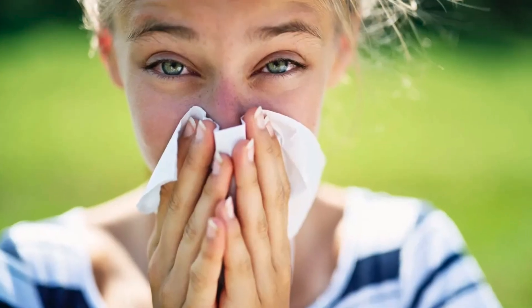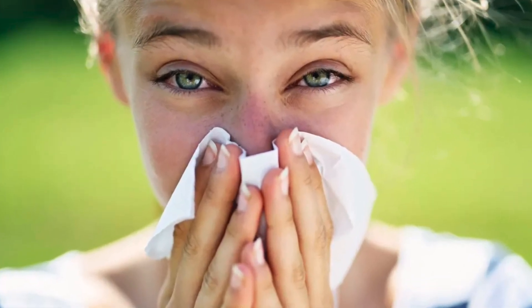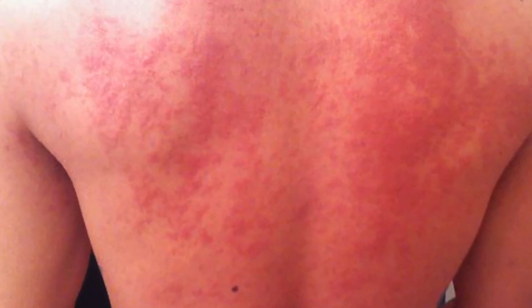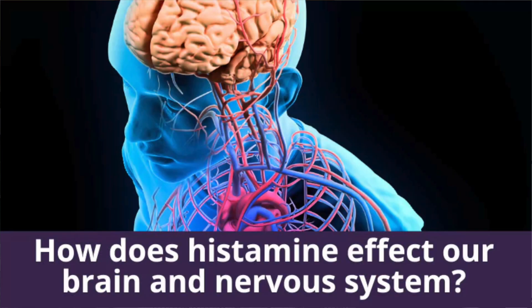Histamine is a signaling chemical that your immune system releases to send messages back and forth between different cells. Essentially, histamine is how certain cells communicate with one another. While you may be aware of histamine in relationship to allergic reactions — like itchy eyes, runny nose, scratchy throat, and red blotchy hives — histamine does so much more than that. Histamine has a powerful effect on sleep, how your body adapts to stress, your mood, and today we're going to talk about how excess histamine causes problems specifically in the brain.